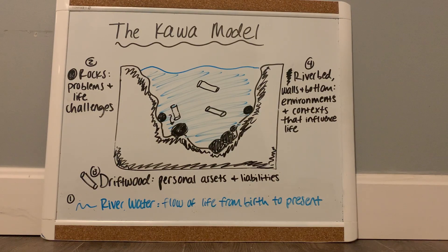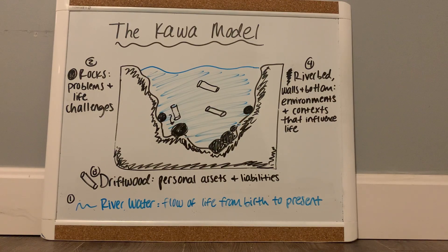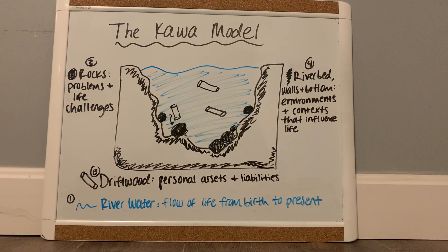The riverbed and the river sides, shown in the black shaded areas, are the fourth element. They represent the client's external environmental factors and the effect of social factors and relationships in their life. As these factors change throughout a client's life, the width and the depth of the river also changes. This element can positively or negatively impact the flow of water depending on how narrow or how wide and deep the river is — the wider and deeper, the more water can flow.